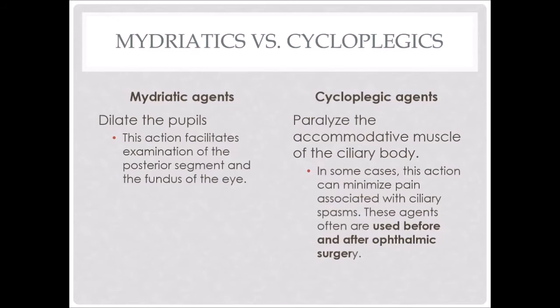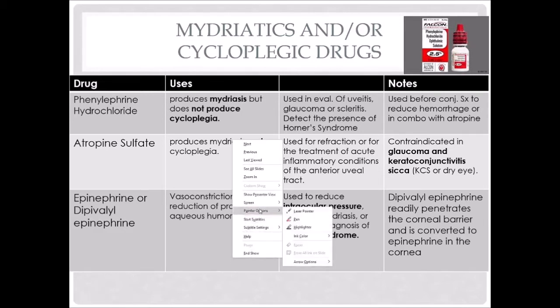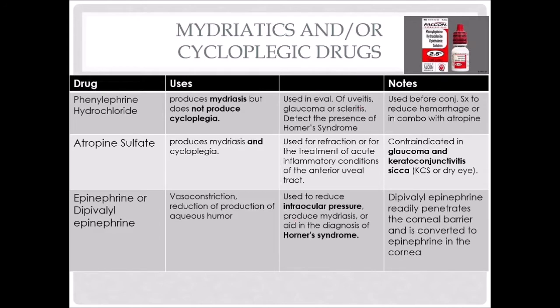Often these agents are used — cycloplegic agents are used before and after ophthalmic surgery. Phenylephrine hydrochloride is a drug that produces mydriasis but does not produce cycloplegia. It's used in the evaluation of uveitis, glaucoma, or scleritis. Uveitis would be inflammation of the uvea or the anterior or posterior chambers of the eye. Scleritis would be inflammation of the sclera, so if you see reddening of the sclera, we can put some phenylephrine in there and see what happens.